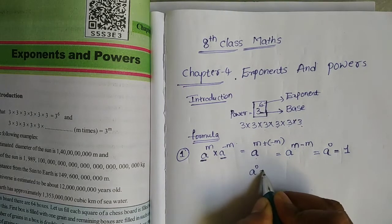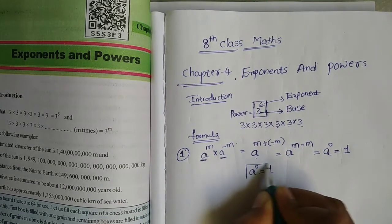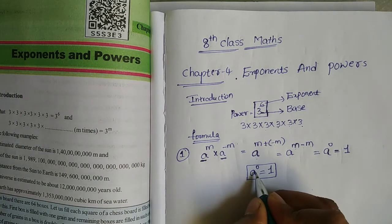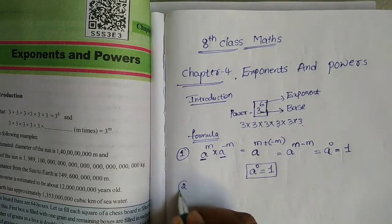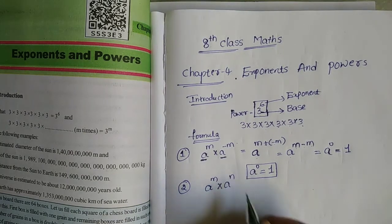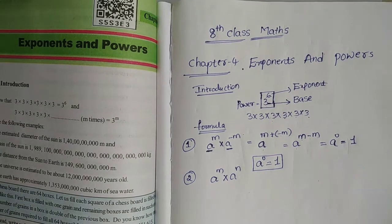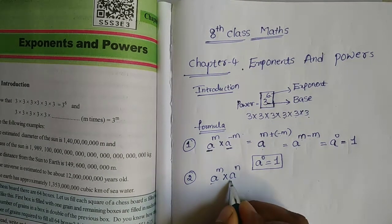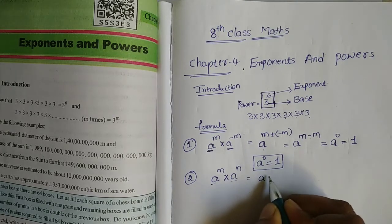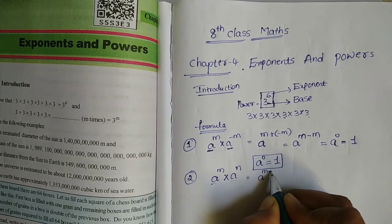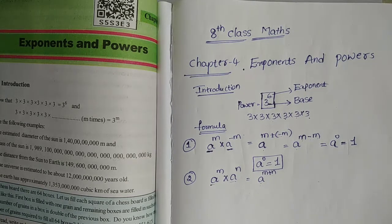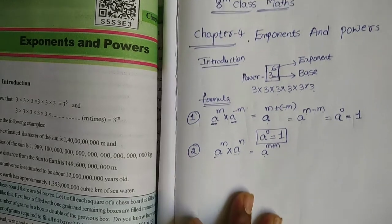So, a to the power of 0 equals to 1. This is our first formula. And the second formula: a to the power of m divided by a to the power of n equals a to the power of n.